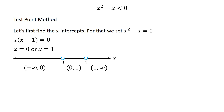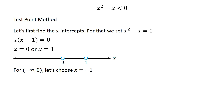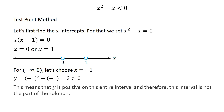Now we will pick a test value inside each interval and calculate y at that value. For the interval negative infinity to 0, let's choose x equal to negative 1. You can choose any value of your choice within an interval. At this value of x, y evaluates to 2, which is greater than 0. This means that y is positive on this entire interval, and therefore this interval is not part of the solution.